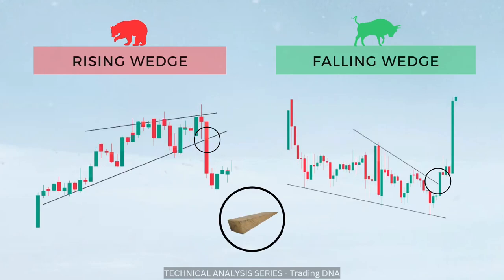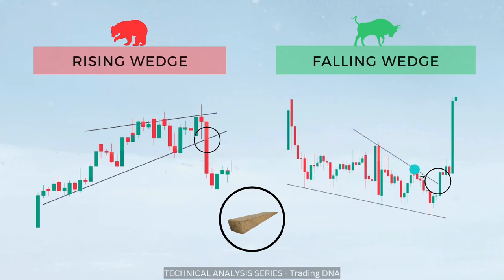Let's look at the wedge with an example. The stock is in an uptrend, takes support and resistance repeatedly, but the bottom trend line is steeper than the upper trend line, and both trend lines are converging at a point. At the point of convergence, the price breaks downward and a trader can go for short selling here — this is the rising wedge. In the falling wedge, the stock is in a downtrend and enters a zone where the upper trend line is steeper than the bottom trend line. When it reaches the point of convergence it gives a breakout upward, and from there a trader can go for a buy. Wedge patterns are mostly reversal patterns.